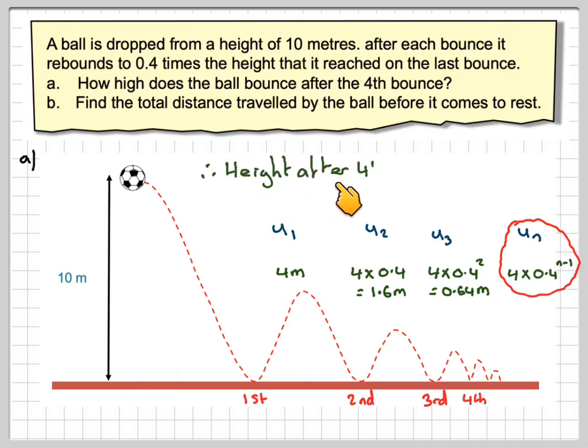So the height after the fourth bounce will be equal to 4 times 0.4 to the power of 4 minus 1, which is 3, so 0.4 cubed, which is 0.256 metres.